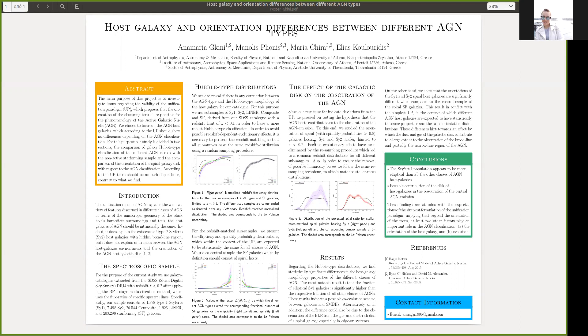Our work consists of two sections. In the first section, we wish to reveal if there is any correlation between the AGN type and the Hubble type morphology of their host galaxy. And in the second, if the galactic disk contributes to the obscuration of the AGN activity.